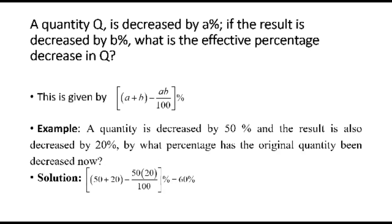In a similar vein, if a quantity is decreased by a percent, the result is decreased by b percent. The effective percentage decrease in q is given by a plus b minus ab over 100, that difference percent.